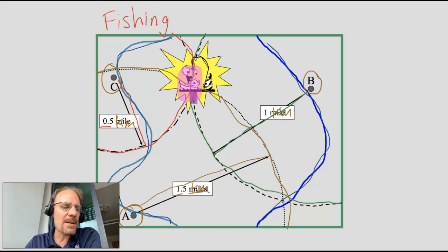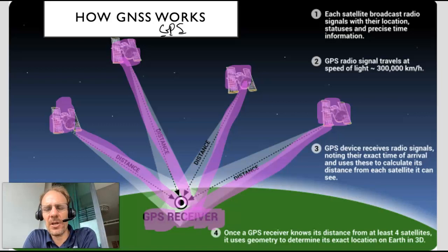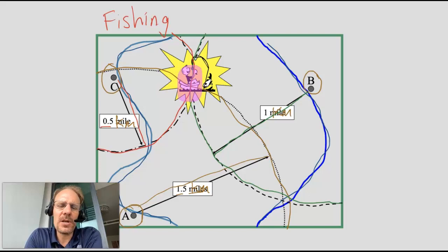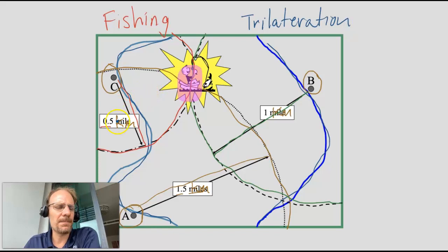GPS uses the same exact concept. You're basically calculating your distance from satellites. And if you've got enough satellites, you can pinpoint your location by knowing your distance. This process is known as trilateration.